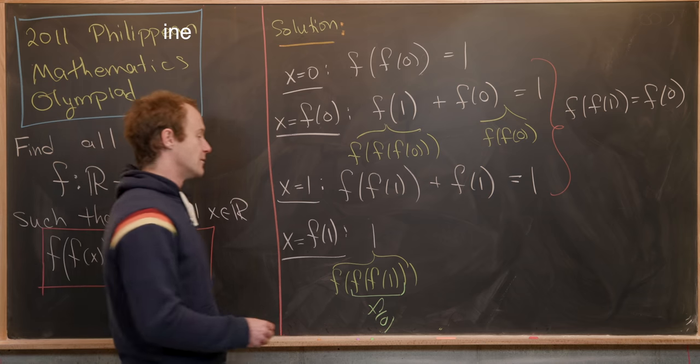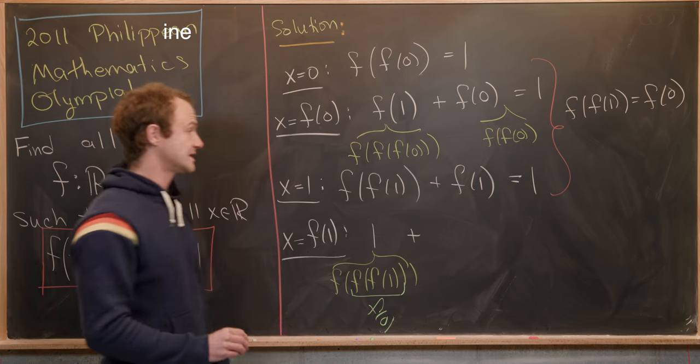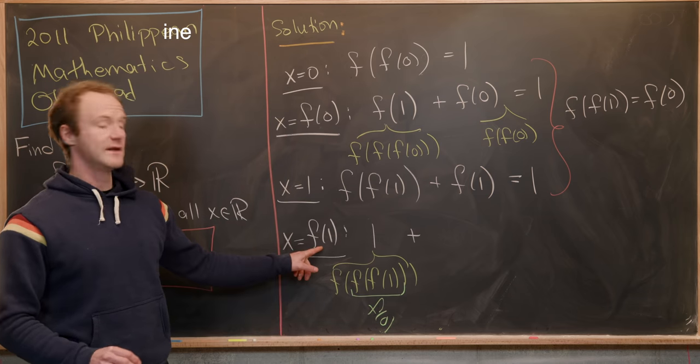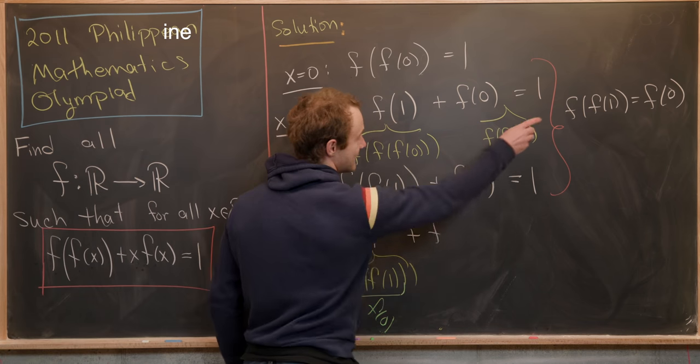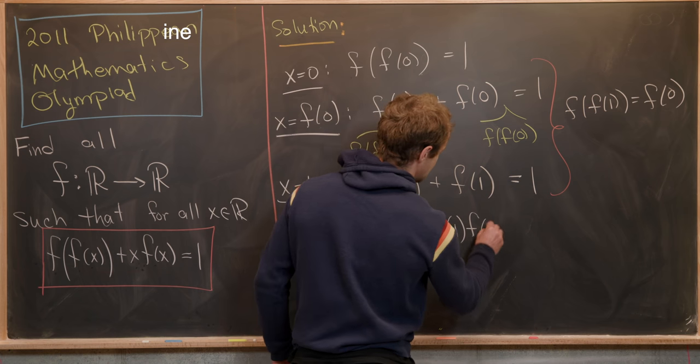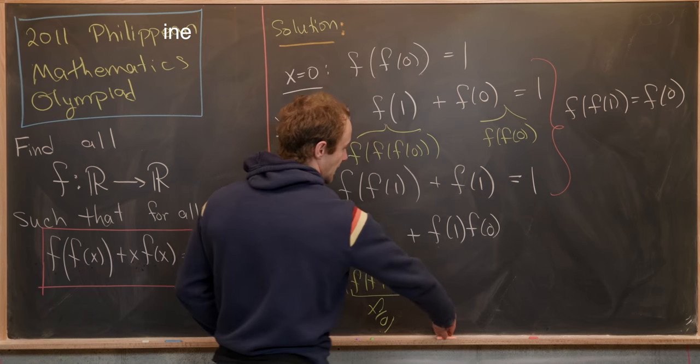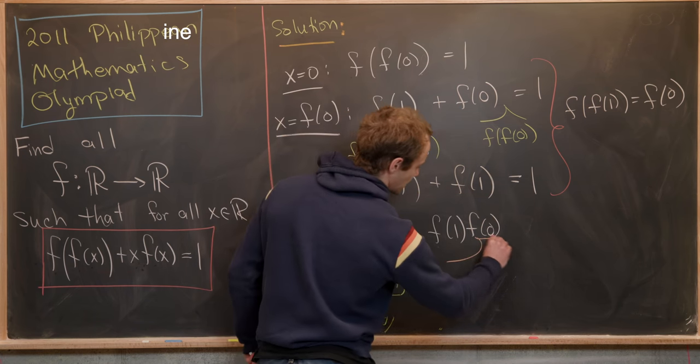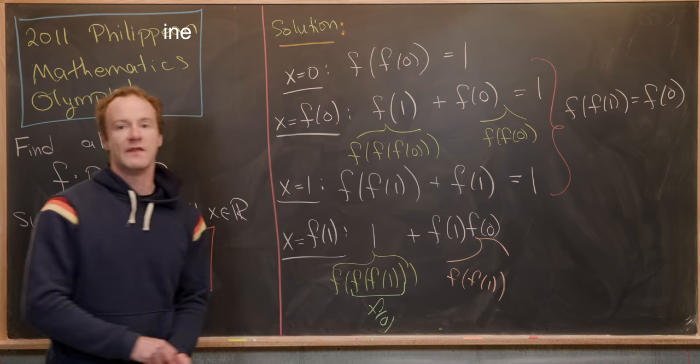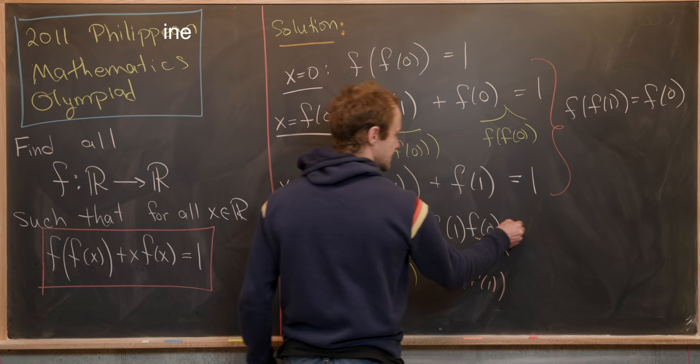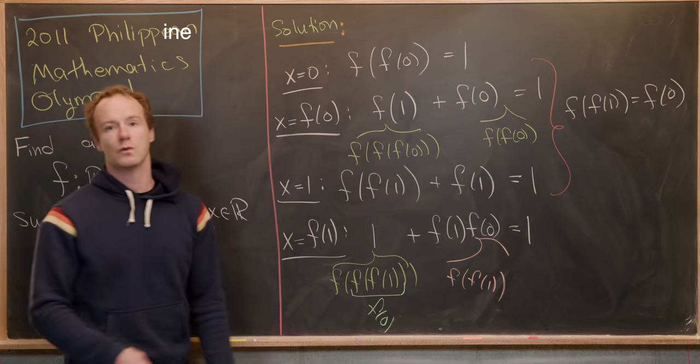Okay, good. But now this is going to be plus f(1). That's x times f(f(1)). But that is f(0) from this here. So we have f(1)·f(0). Again, this term right here comes from f(f(1)). And then over on the right-hand side of the equation, we have this is equal to 1.